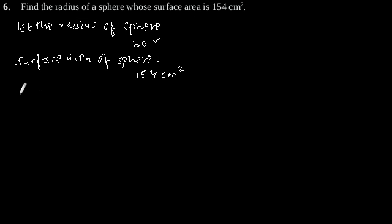So 4πr² = 154. This will become 4 × (22/7) × r² = 154.